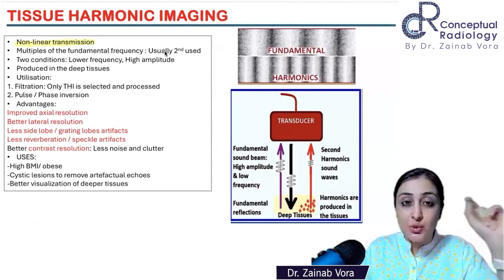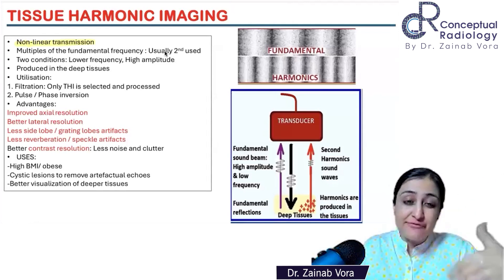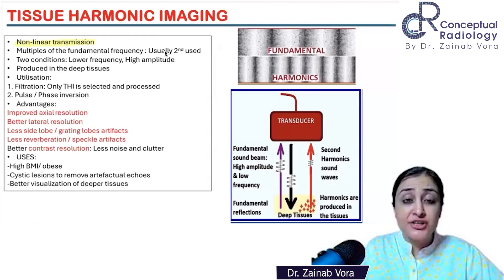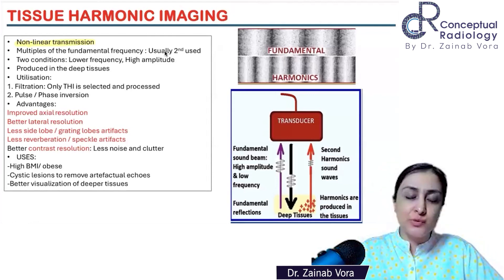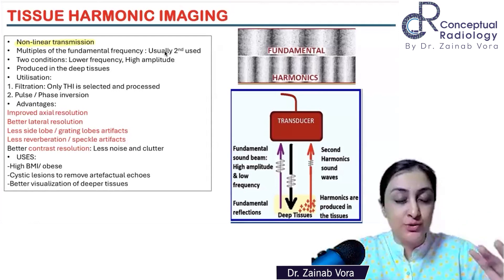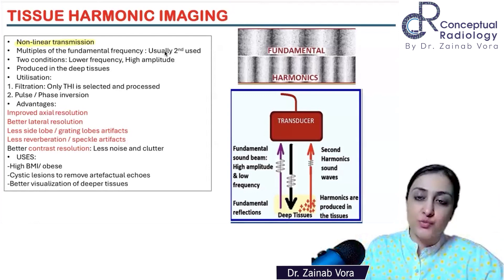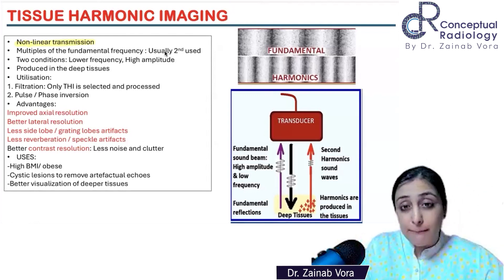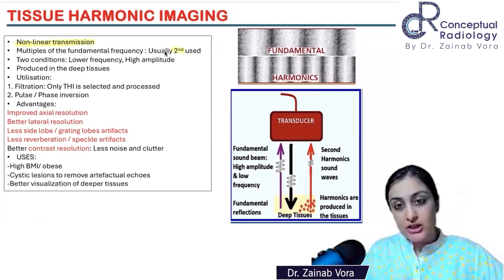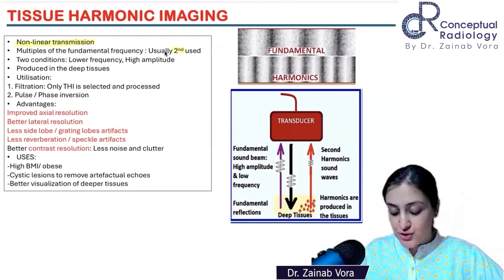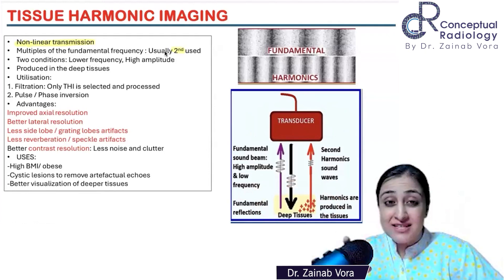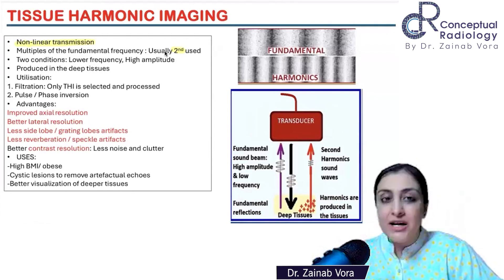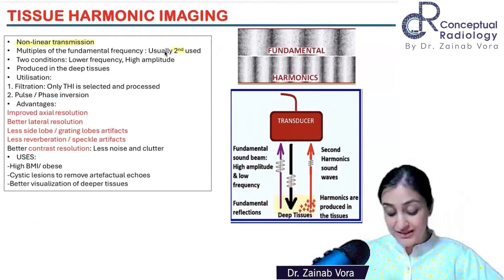Non-linear transmission is the first buzzword you have to write. Whatever I'm highlighting are your buzzwords. Since this is a physics class it's information heavy, so I've written it down so you have bullet points — because you're supposed to write a theory answer, I've given you the points. So, non-linear transmission is the first buzzword. We most commonly use the second harmonic. Now, who produces the harmonic? The transducer has nothing to do with harmonics — we are not producing them. The tissues are producing the harmonics.